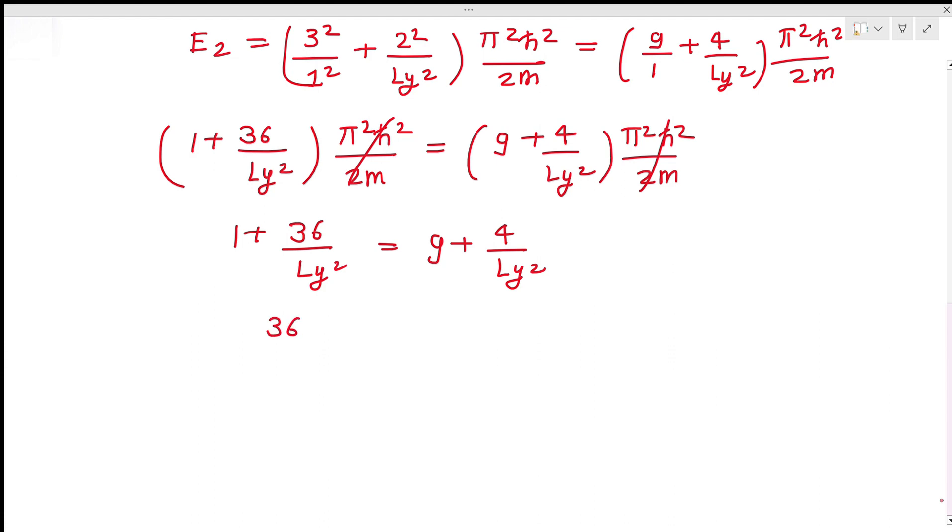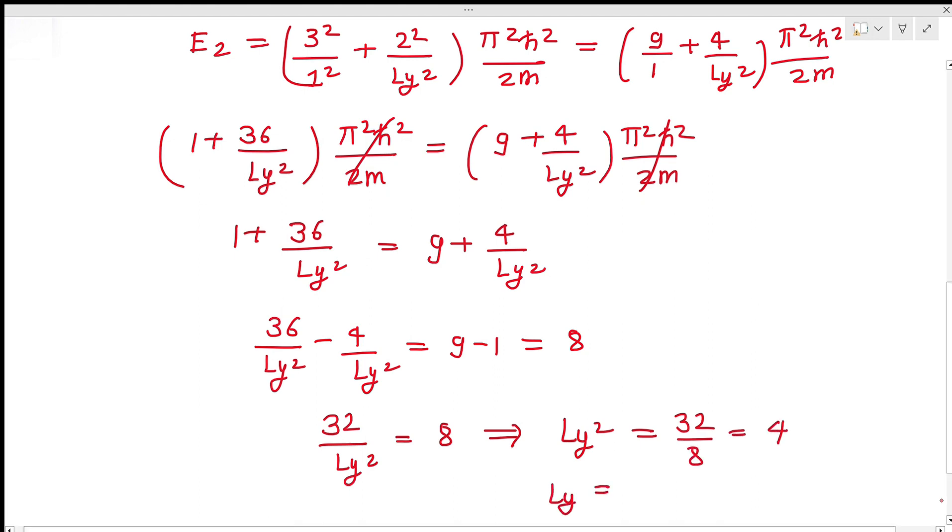We can write 36 upon LY square minus 4 upon LY square is equal to 9 minus 1, is equal to 8. Or we can write 32 upon LY square is equal to 8. Or this can be written as LY square is equal to 32 by 8, is equal to 4. It means LY is equal to 2.